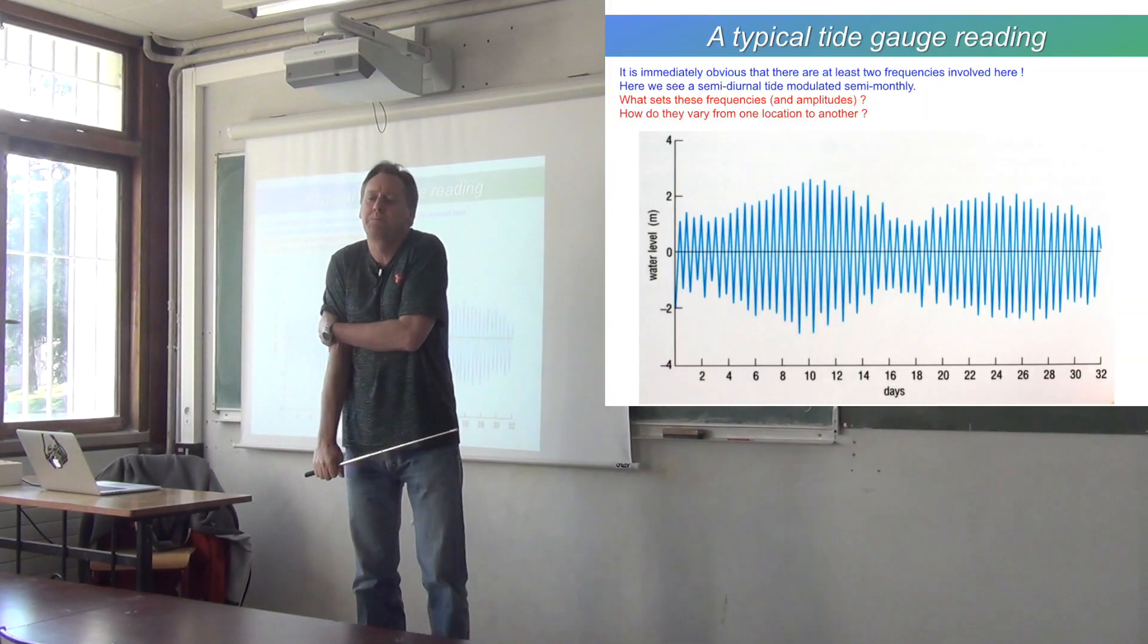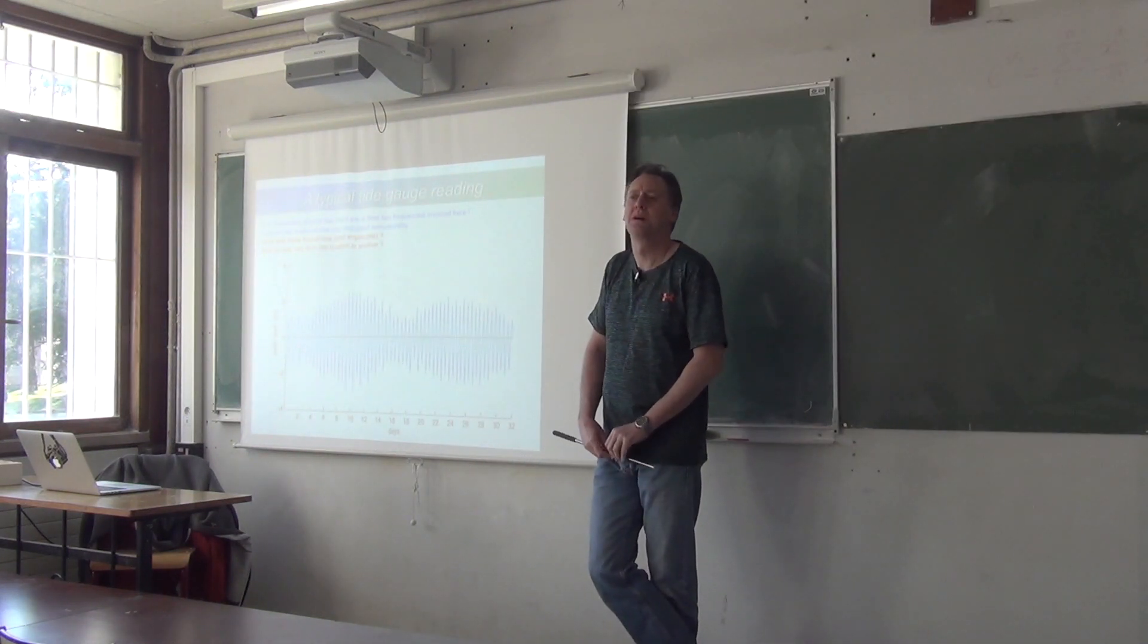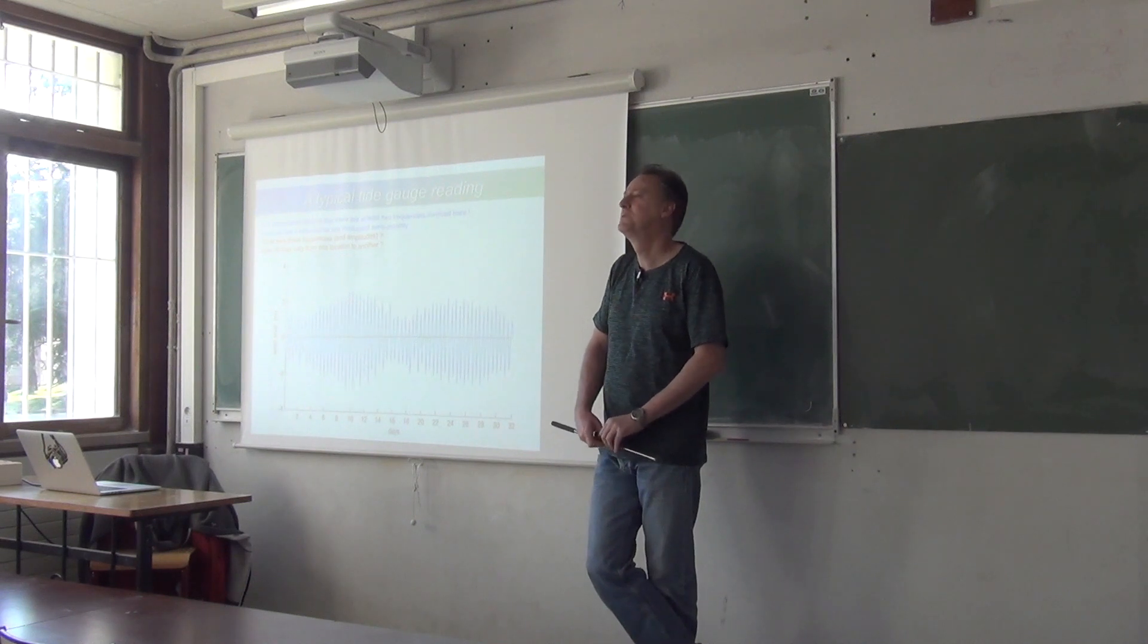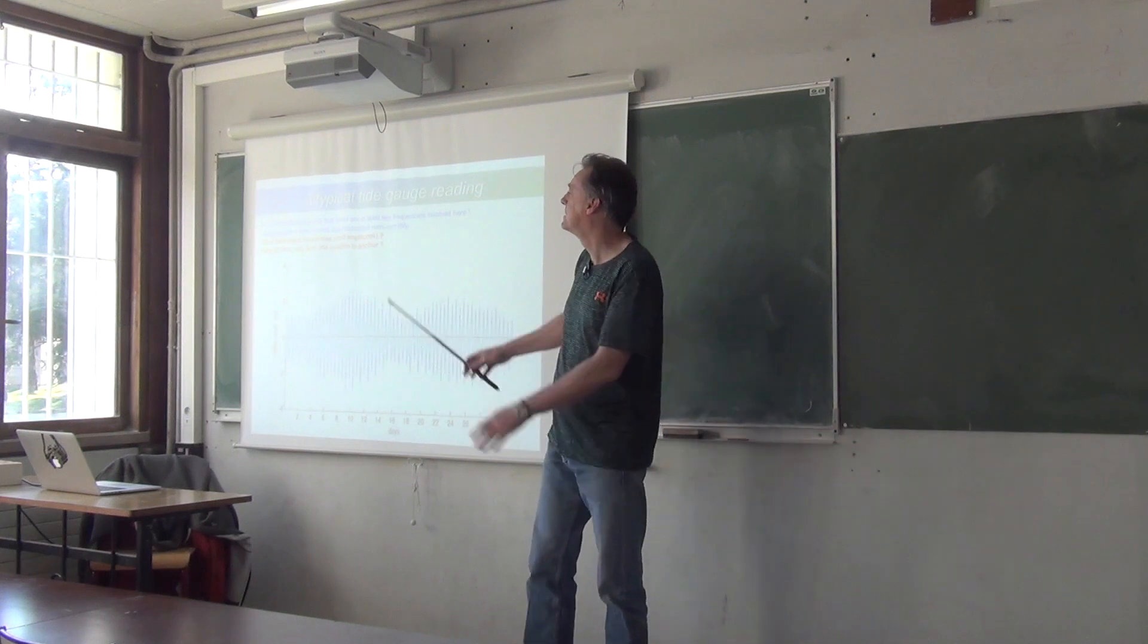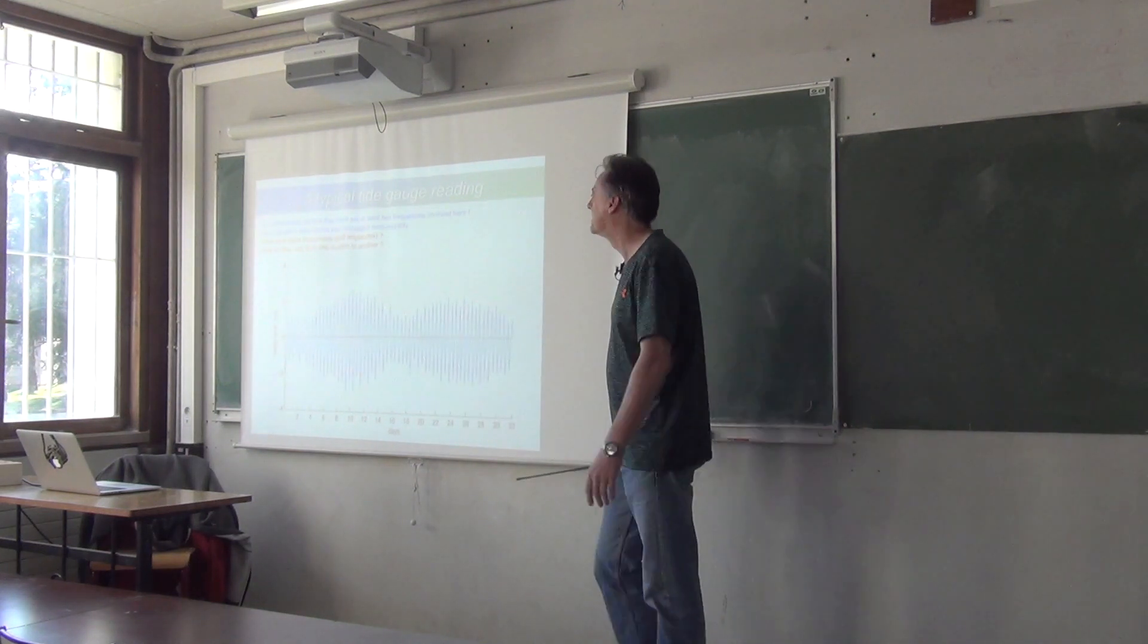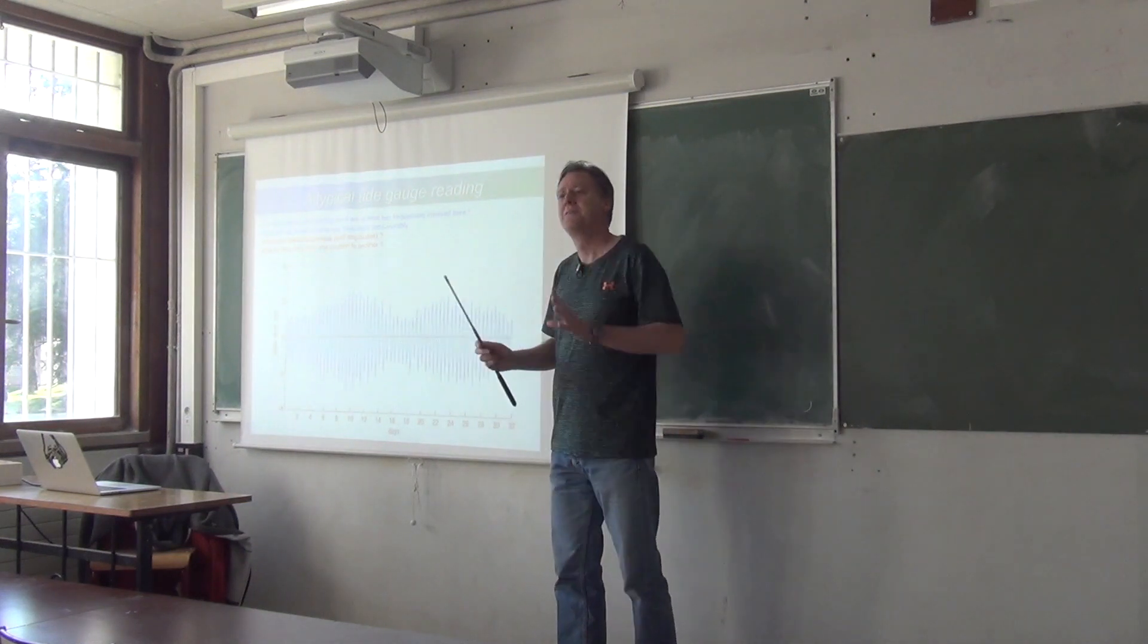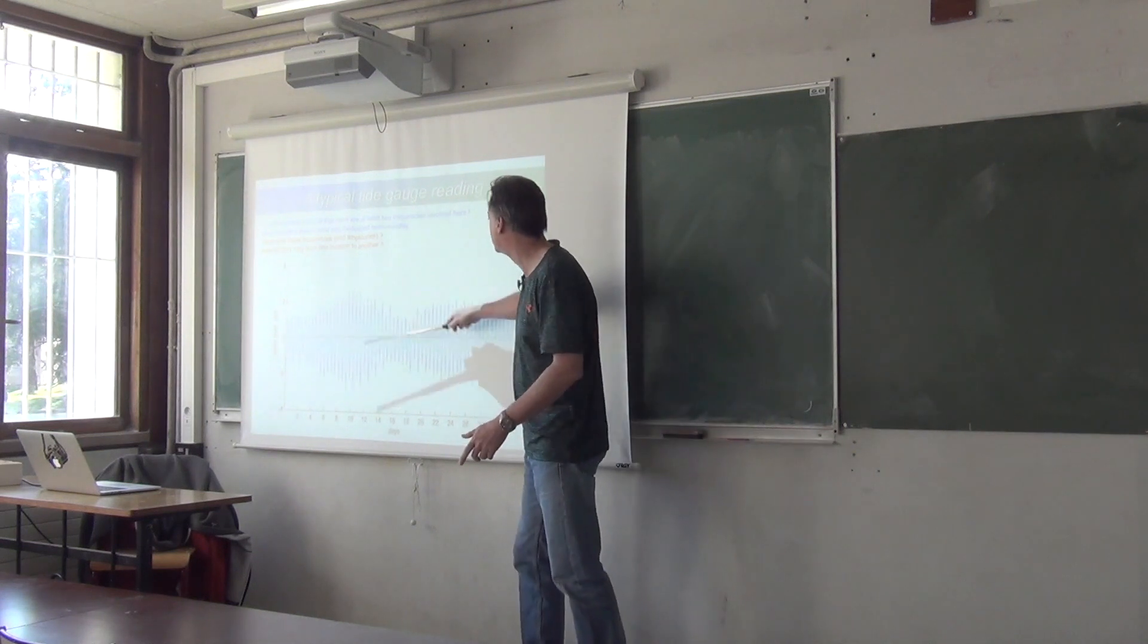But what could it be? What could it be that's giving you two different frequencies? There's two things out there that are causing the tides. Two great big objects in the sky. One is up there. It's a beautiful day. You can see one of them now. The moon and the sun. So there's two things. They both contribute to the tides, not exactly at the same frequency. So that's where you get this modulation.